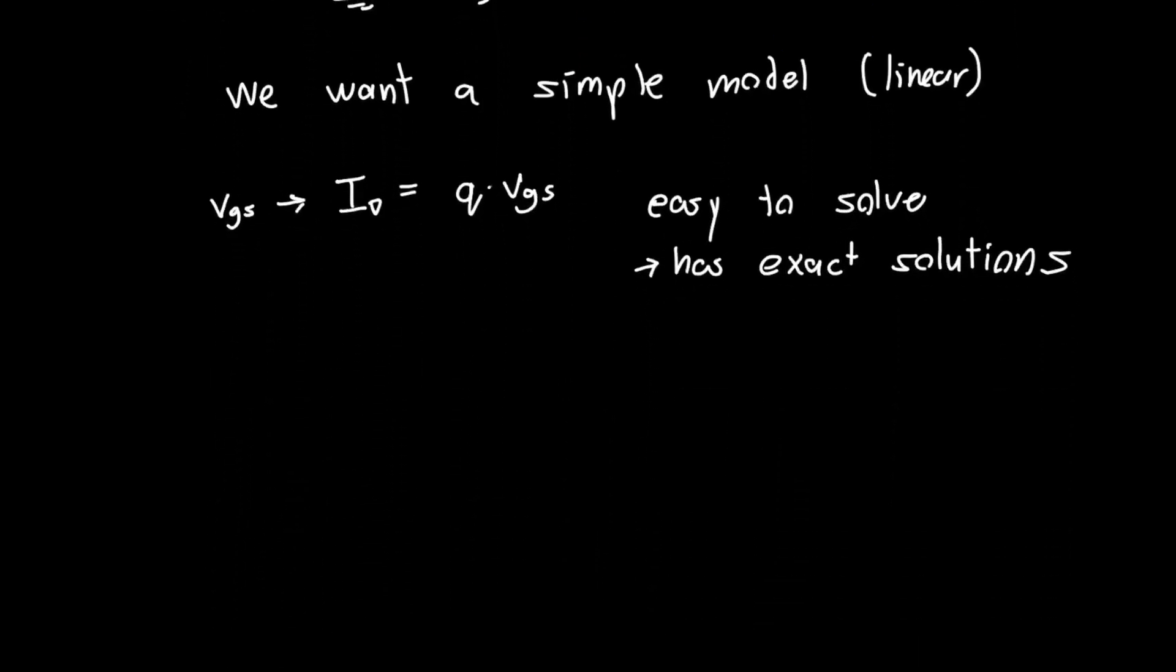So we're okay with, and this is obviously nonsense. This is nonsense, because we know the ID is quadratically related to VGS, right? But we want to derive an approximate model.